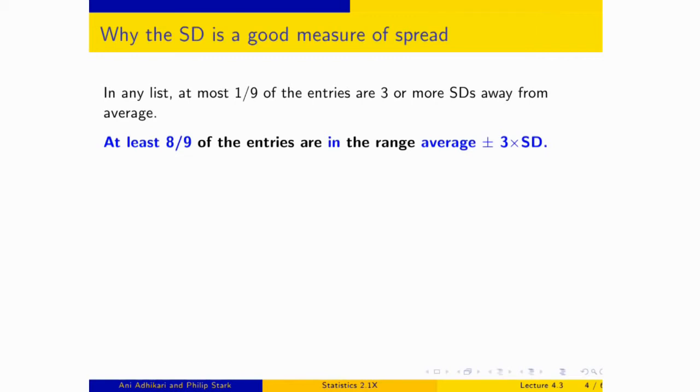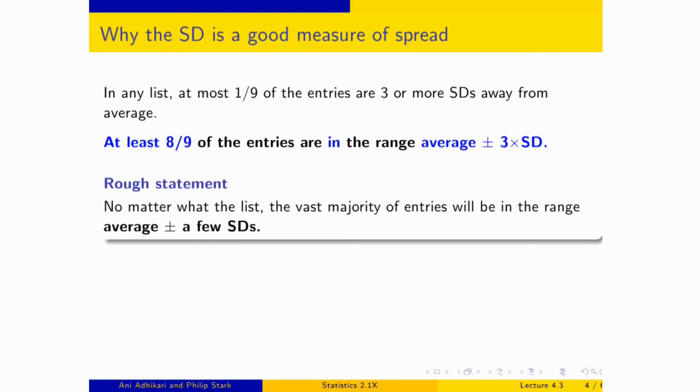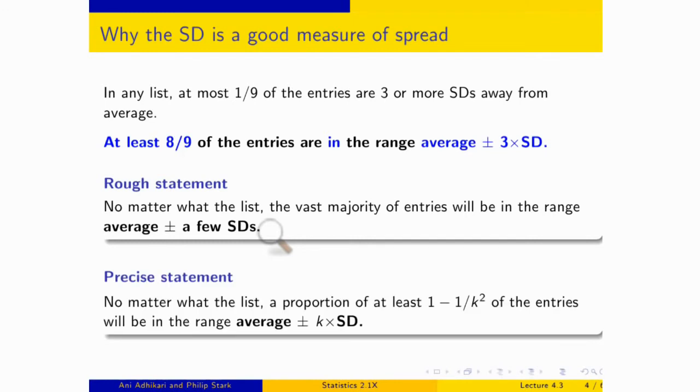And so here we have a rough statement that we made earlier, which said no matter what the list, the vast majority of entries would be in the range average plus or minus a few SDs. And now Chebyshev has made that precise. No matter what the list, if you go average plus or minus k SDs, then the proportion in that interval will be at least one minus one over k squared.